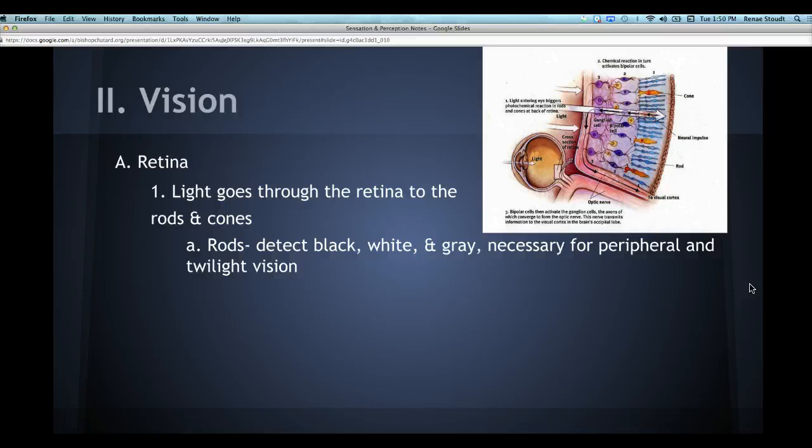Notice that we have more rods than we have cones. So, rods are detecting the black, white, and gray, and this is necessary for peripheral vision.